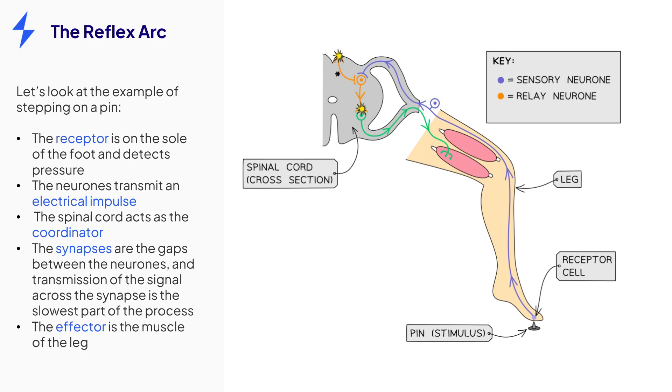The impulse passes across the synapse to a relay neuron in the central nervous system. The spinal cord sends the impulse to the motor neuron via another synapse, although another impulse is simultaneously sent to the brain to ensure there is a conscious awareness of the stimulus.